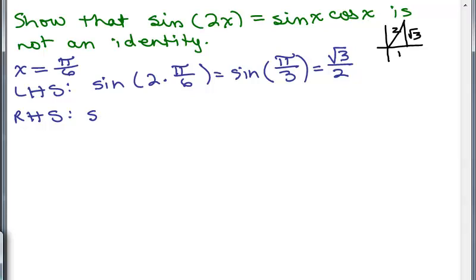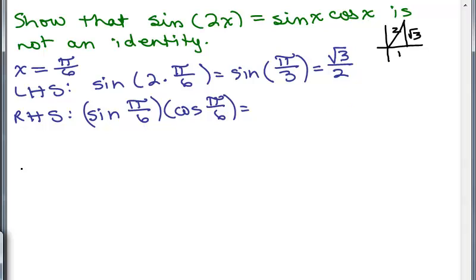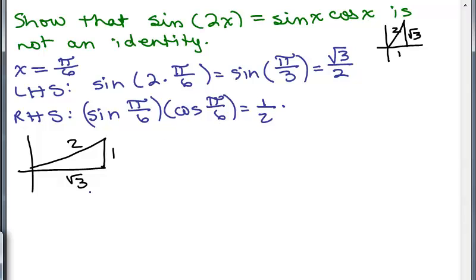Now the right-hand side: it's sine of x times cosine of x, with x equal to pi over 6. So it's sine of pi over 6 times cosine of pi over 6. Looking at pi over 6 on the unit circle — the 30-degree angle with coordinates (√3/2, 1/2) — the sine of pi over 6 is 1/2 and the cosine of pi over 6 is √3/2. So I have 1/2 times √3/2, which gives √3/4. The left-hand side was √3/2, but the right-hand side is √3/4.